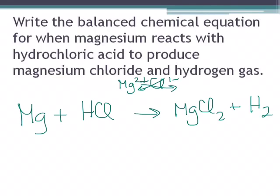Now looking at balancing that equation, we have one magnesium on the reactant side, one on the product side, one hydrogen on the reactant side, two on the product side. Let's put that two there to balance out the hydrogens, which also balances out our chlorines.